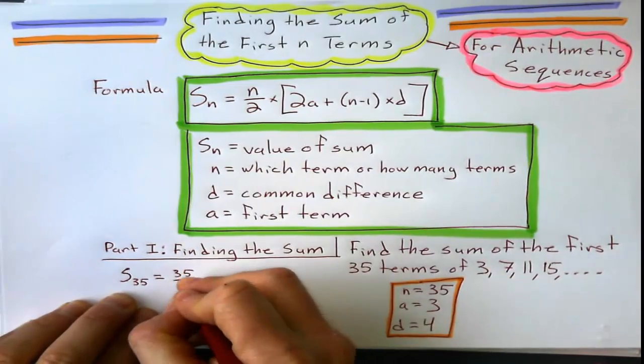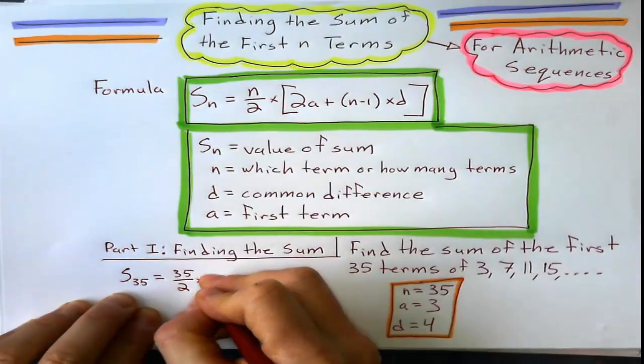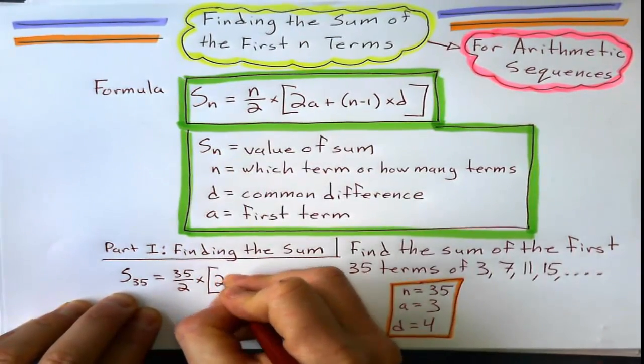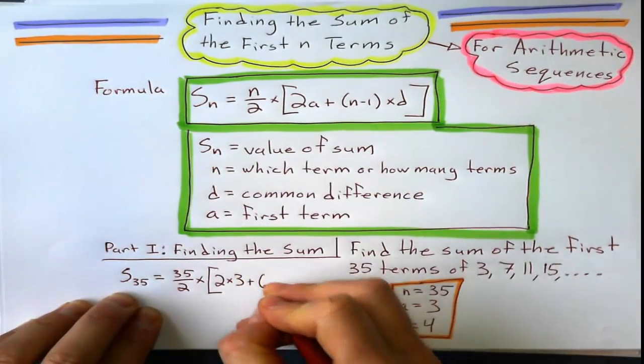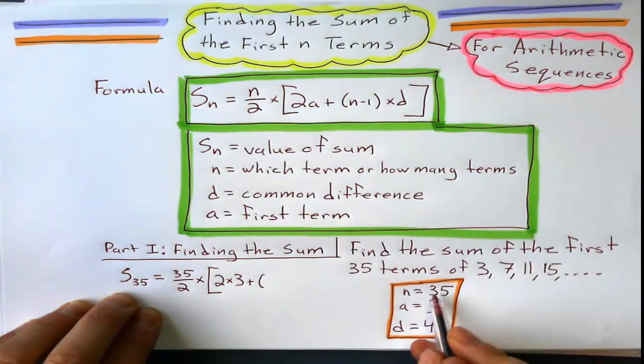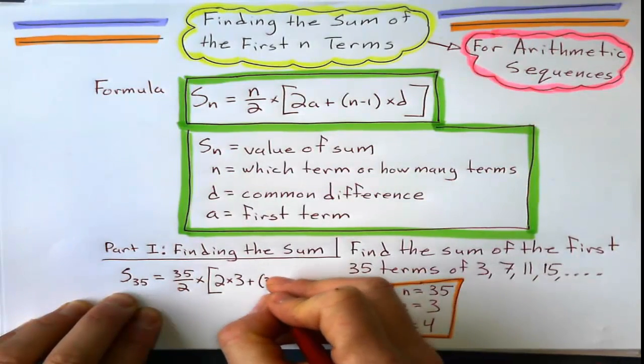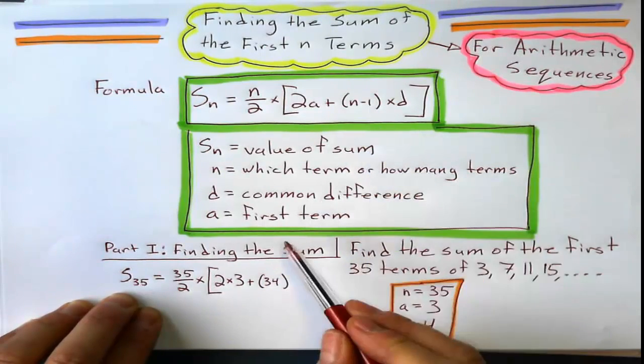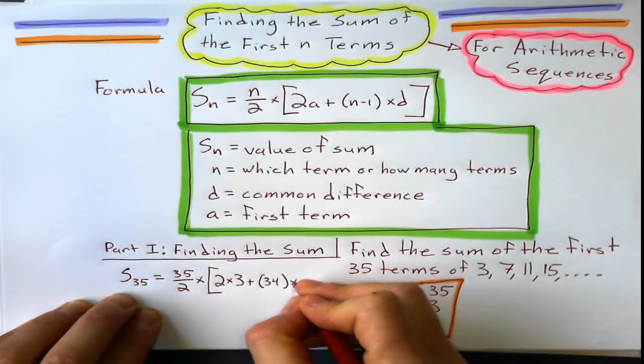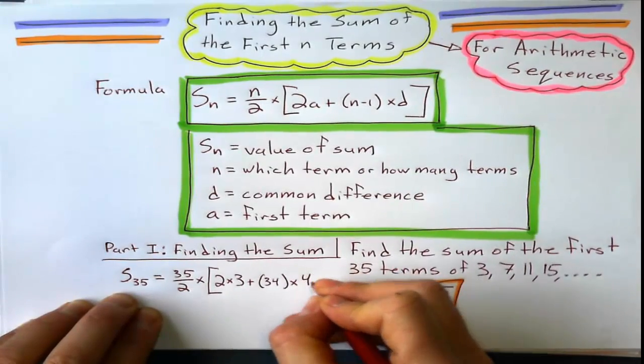We use these values, substitute them into this formula. 35 divided by 2 times, 2 times the first term, 2 times the first term is 3, plus n take away 1, n take away 1 is 34. I'm just going to put that right in there, instead of doing 35 minus 1, times my common difference.